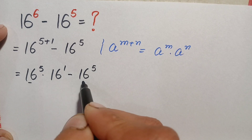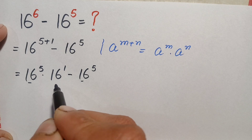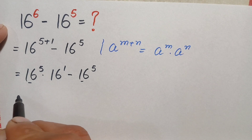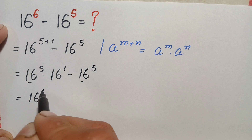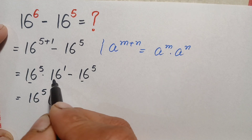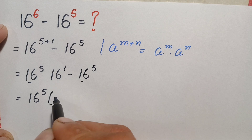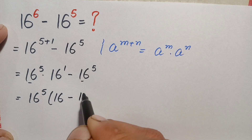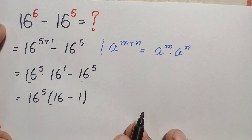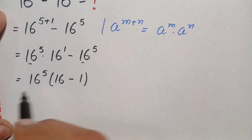Now, 16 to the power 5 is common in both terms, so we factor it out. This gives us 16 to the power 5 times the quantity (16 minus 1).